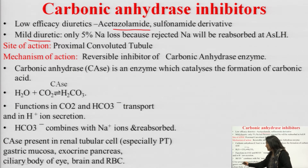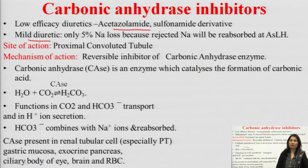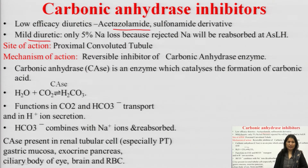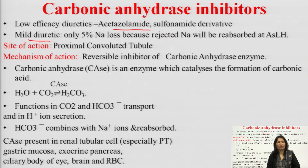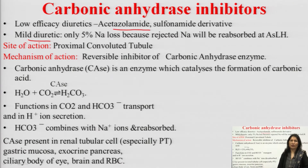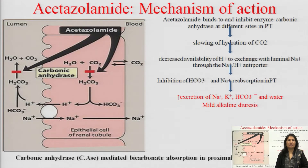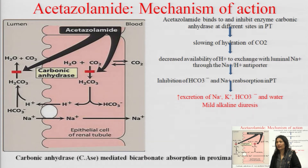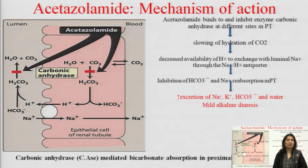Carbonic anhydrase enzyme is present in the renal tubular cells — especially proximal tubule — as well as gastric mucosa, exocrine pancreas, ciliary body of the eyes, brain, and red blood cells. This is the location of the carbonic anhydrase enzyme.